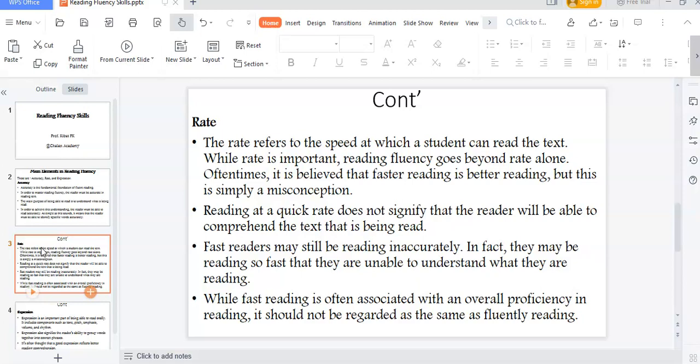The second element is rate. The rate refers to the speed at which a student can read a text. While rate is important, reading fluency goes beyond rate alone. Oftentimes it is believed that faster reading is better reading, but this is simply a misconception.